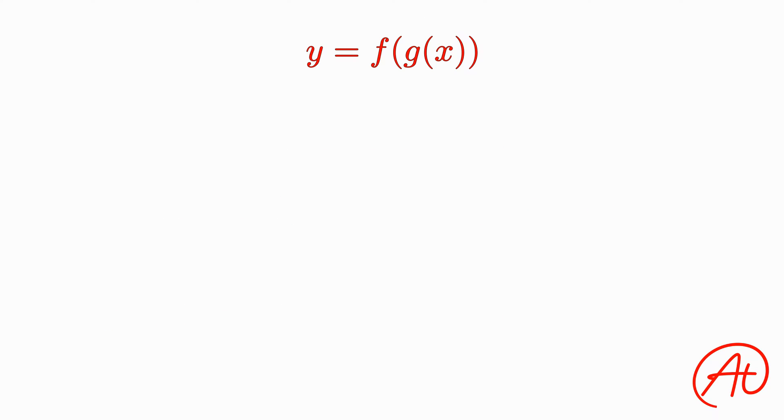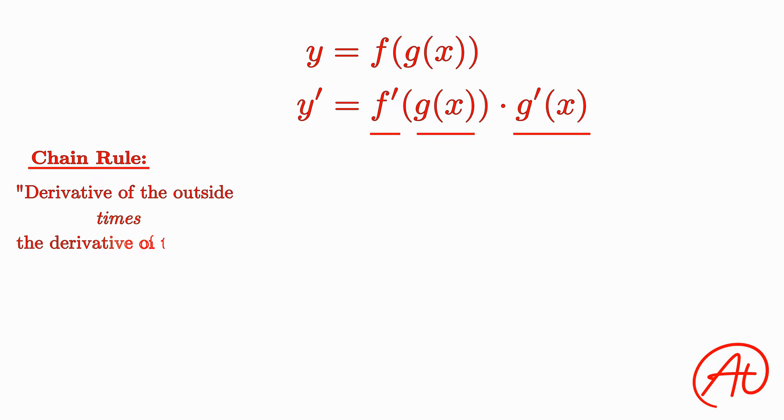Okay, so what is the chain rule and how do we use it? Returning to our symbolic equation, the chain rule can be written like this. Now this may look confusing, but all that you have to do is take the derivative of the outside function, keeping the inside where it is, and multiply that by the derivative of the inside function.